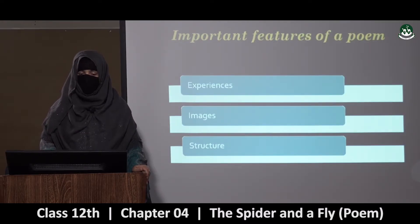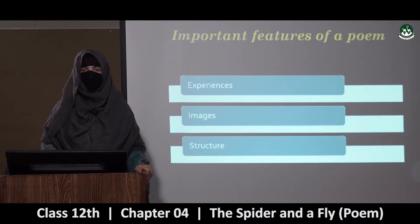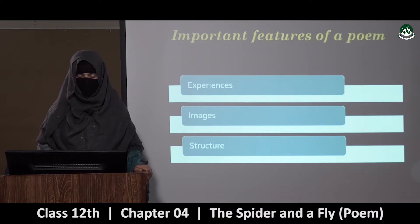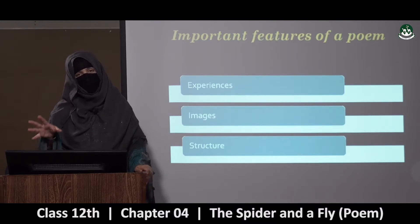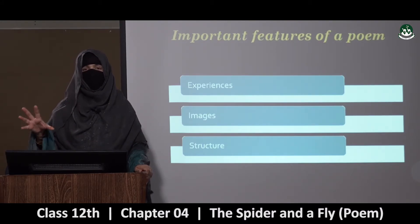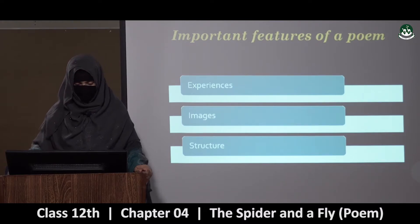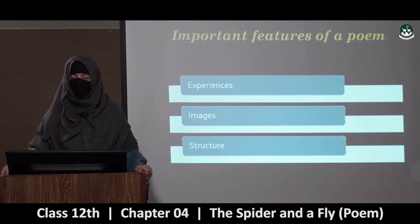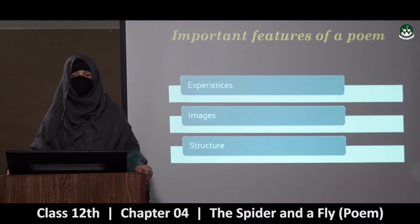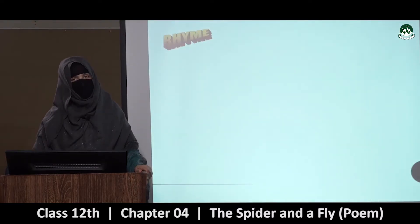Poem ke important features ya conventions kya hote hai? Us mein important features mein poet ke experiences aate hai, us ke images aate hai, aur us ka structure aata hai. Poetry ki form mein aapko different images nazar aayenge — word pictures aapko nazar aayenge. Or us poem ka structure bhi. Thik hai? So let's see.